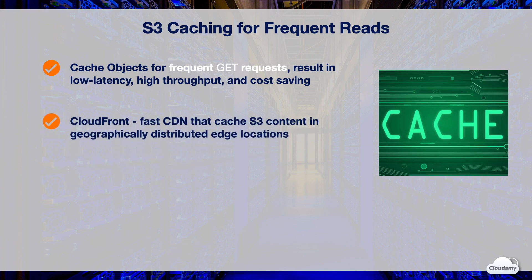Amazon CloudFront is a fast CDN that transparently caches data from S3 in geographically distributed edge locations. When objects are accessed from multiple regions or over the internet, CloudFront allows data to be cached close to the users accessing the objects. This can result in high-performance delivery of popular S3 content. CloudFront is recommended for distributing static or dynamic content globally.